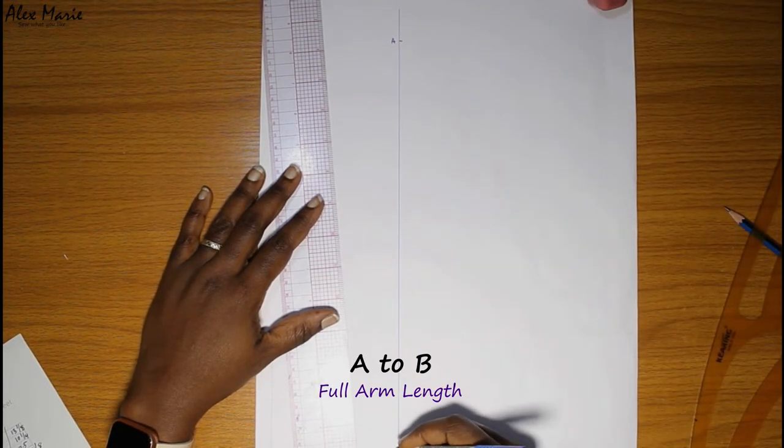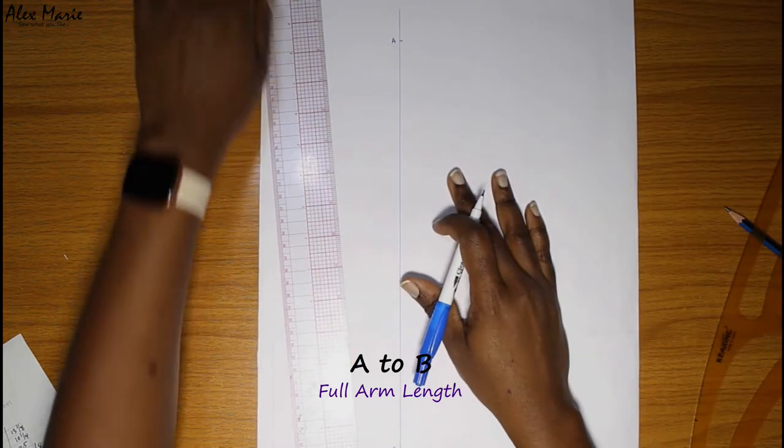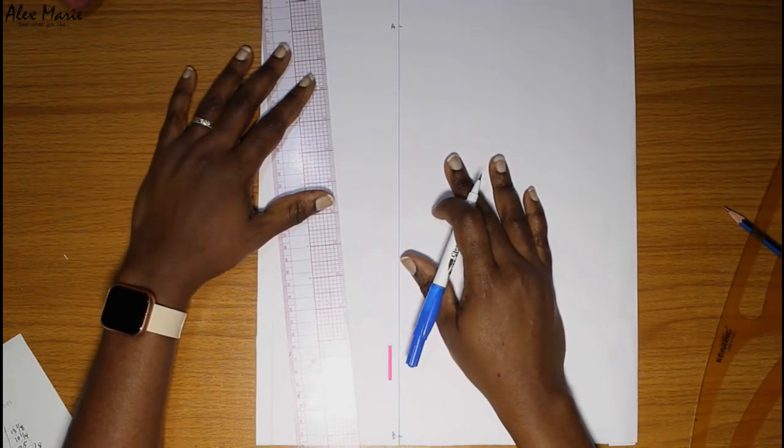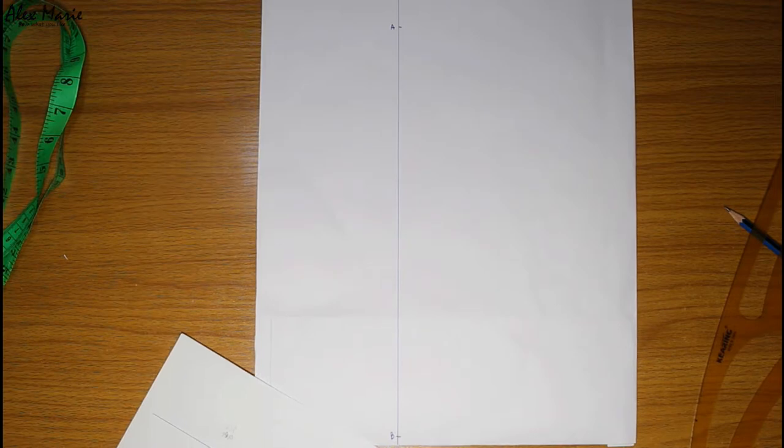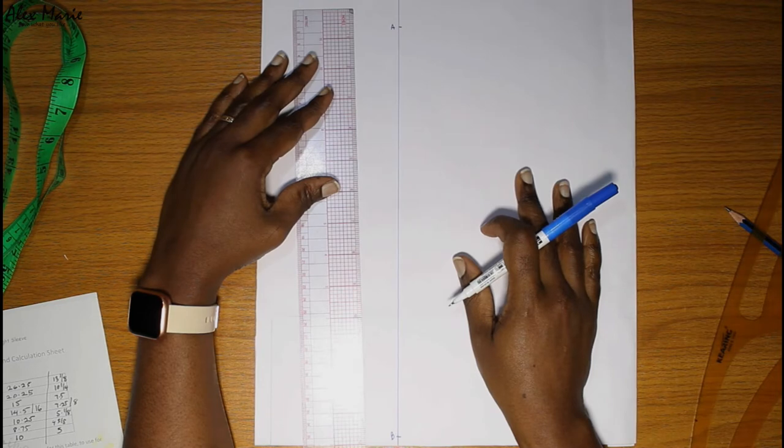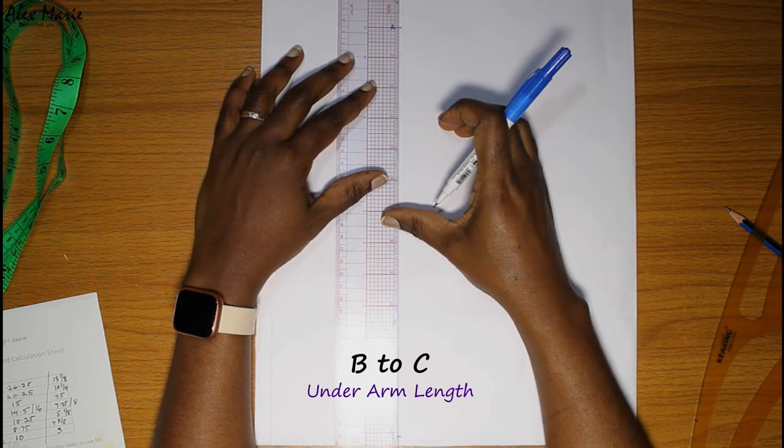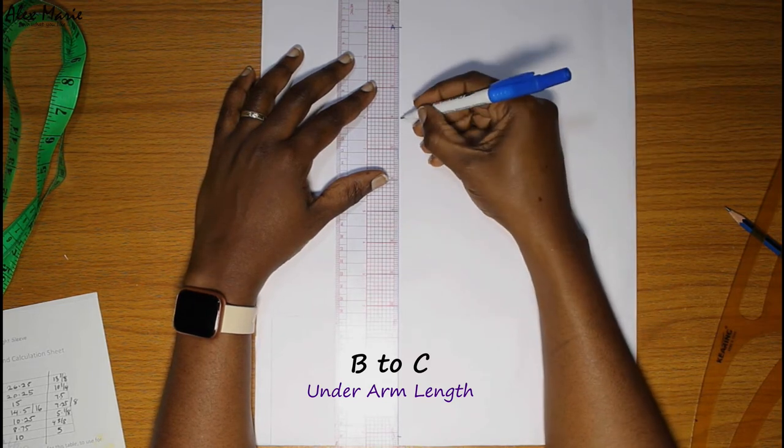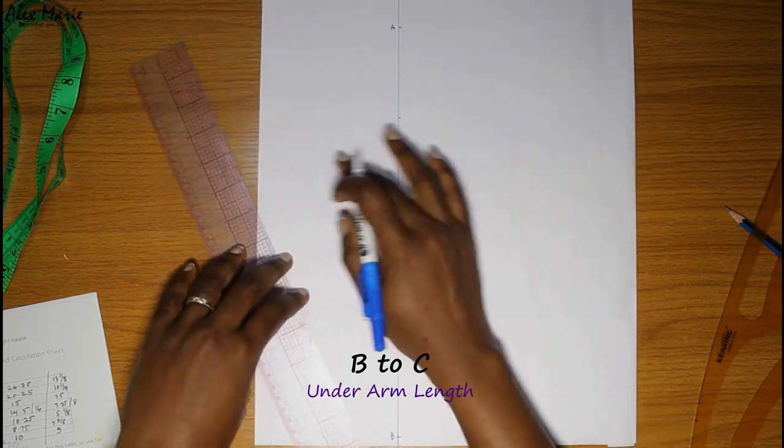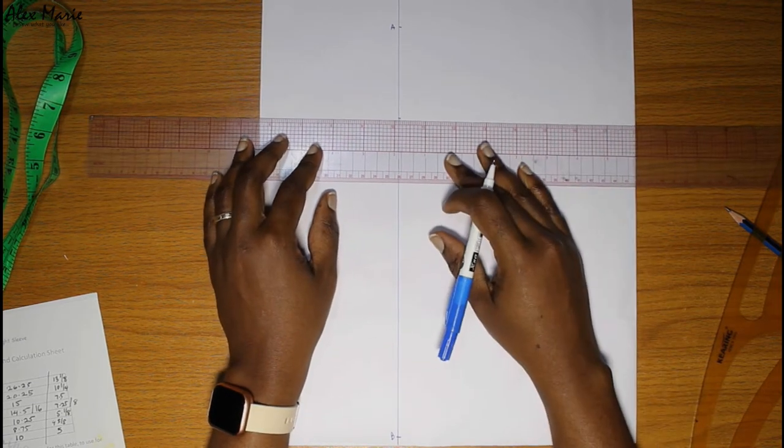So A to B is your full arm length. Okay, then B to C—it's actually from the bottom, measure from B upwards to C, put your underarm length. That will give us our cap height. Our cap height is A to C, so that's what we're doing.